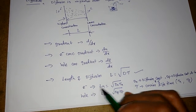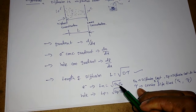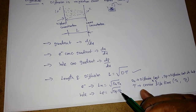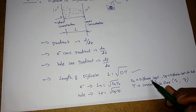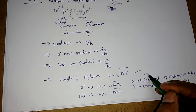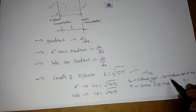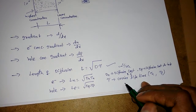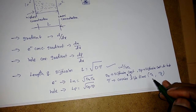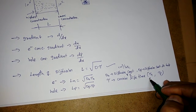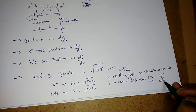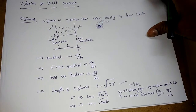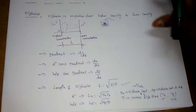For electrons, the diffusion length is Ln = √(Dn × τn), and for holes it is Lp = √(Dp × τp). Here Dn and Dp are diffusion constants in units of cm²/s, and τn and τp are the carrier lifetimes for electrons and holes respectively.